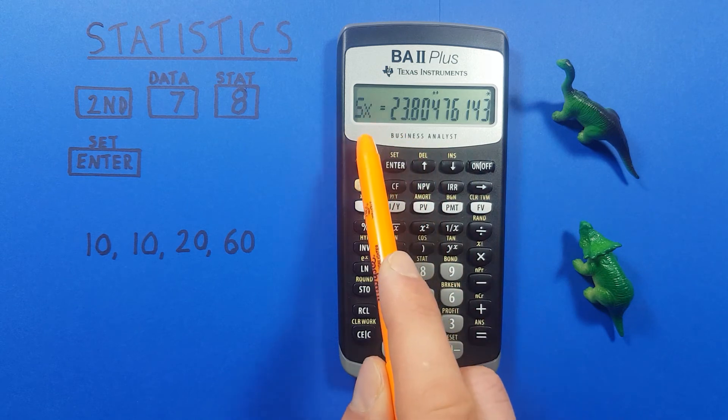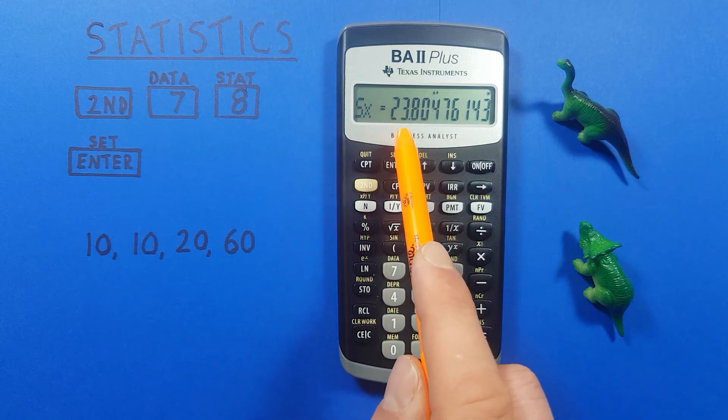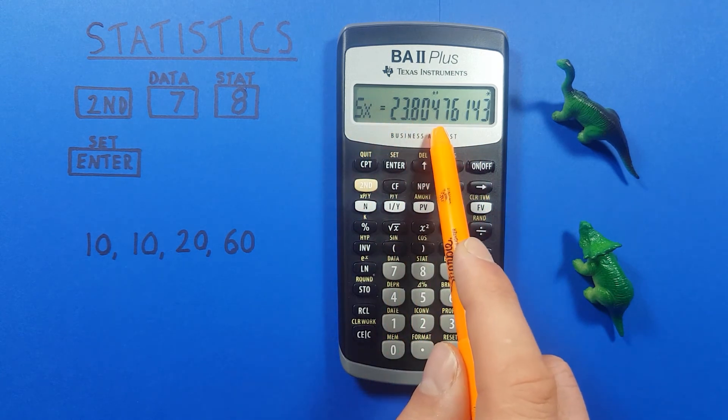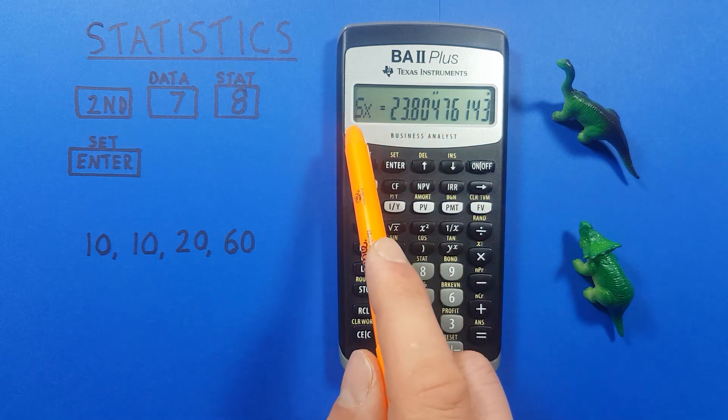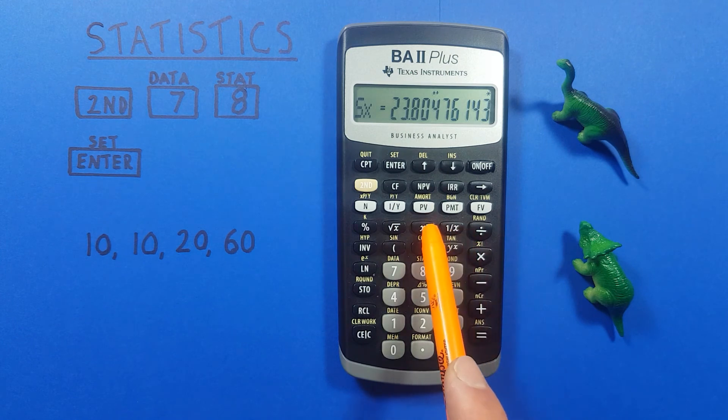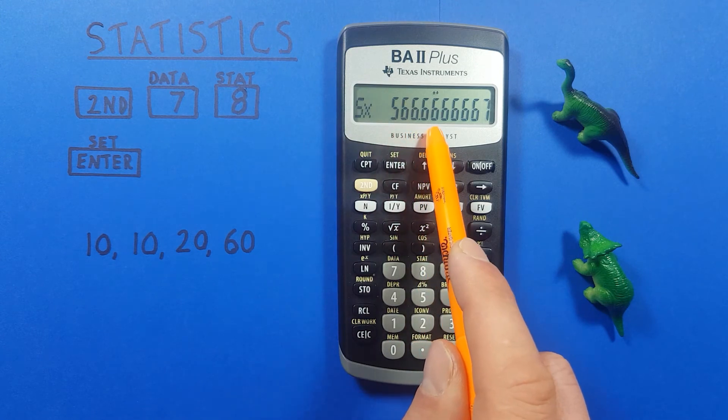Down again we get big sigma x is equal to 23.804. What this represents is the sample standard deviation of our data set. We can also calculate the sample variance of our data set by squaring this number with the x squared key and we see we get a sample variance of 566.666.